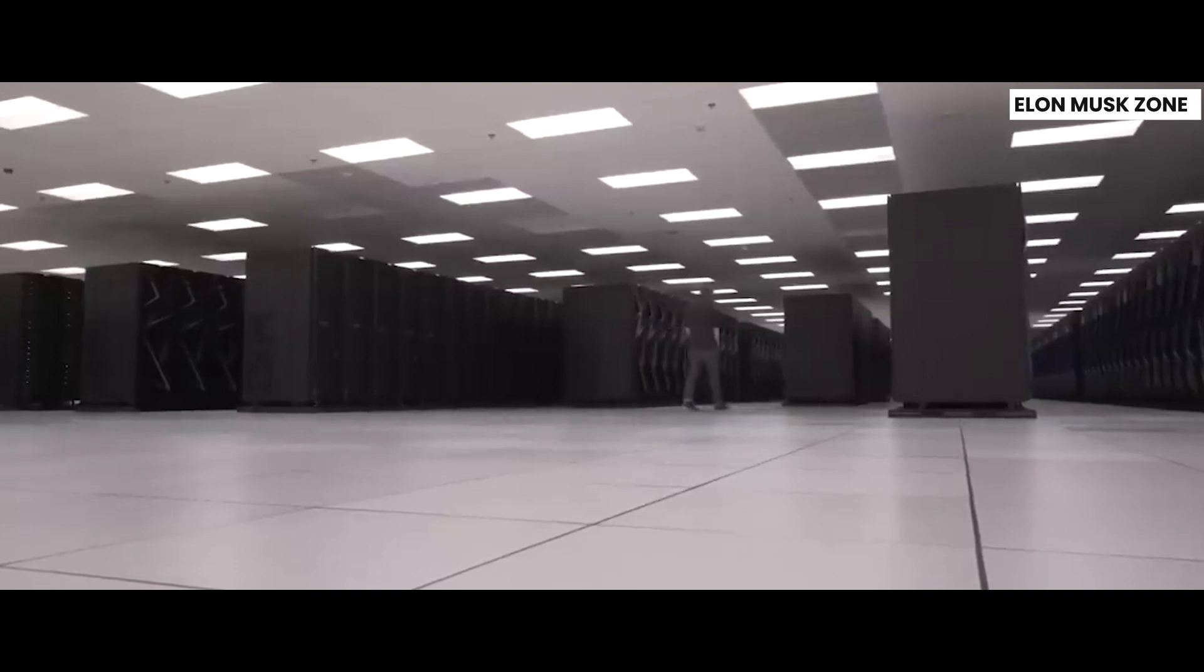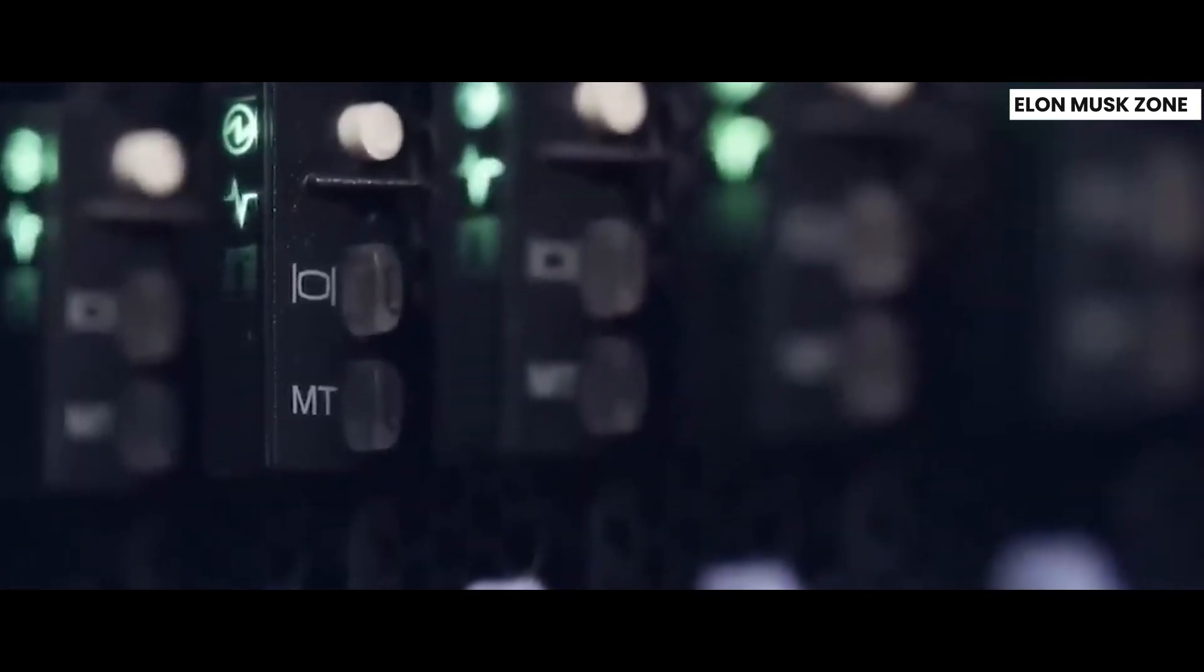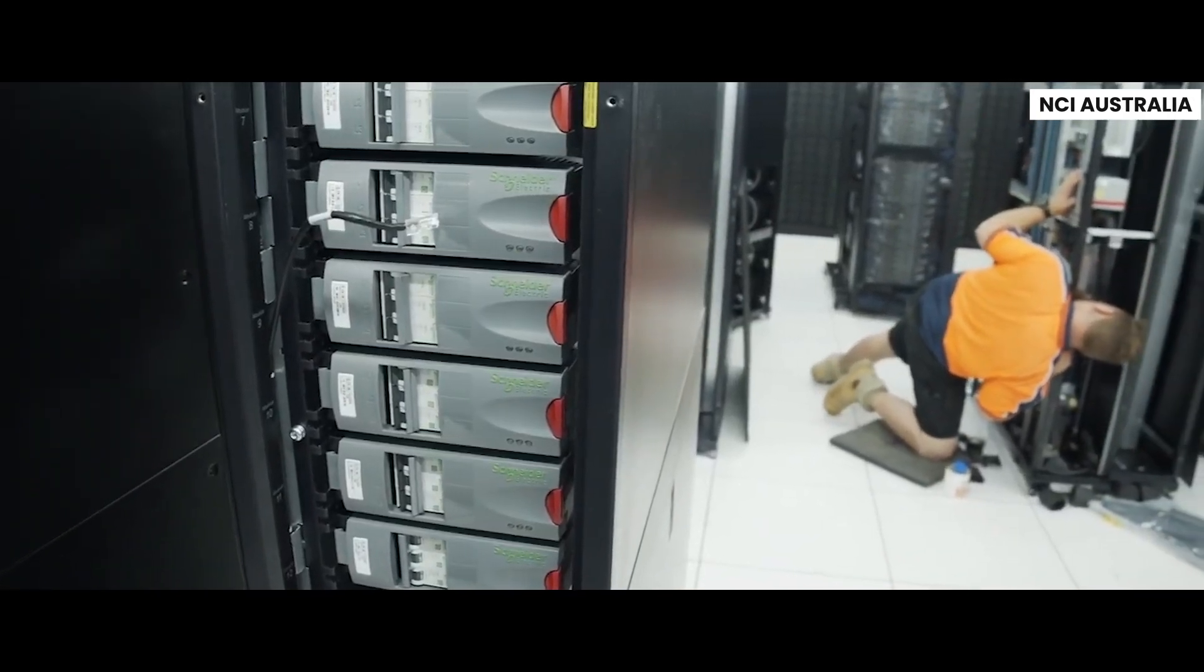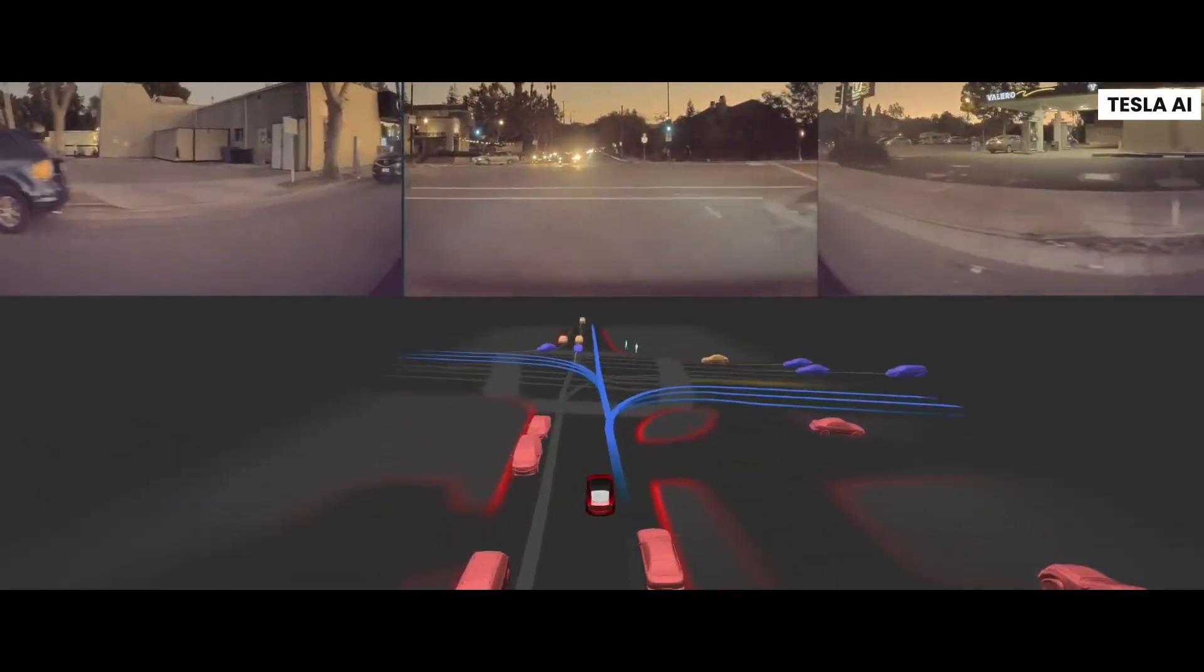Let me break it down for you. Tesla has a plan in place for their Dojo supercomputer. They're going to keep adding more trays and cabinets to make it one of the most powerful supercomputers in the world by early 2024. And you know what? It seems like Tesla has even bigger plans to go beyond that by the end of next year. It's going to help Tesla make the most of their huge collection of real-world driving data.